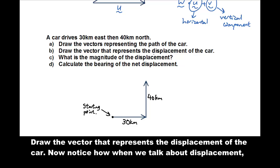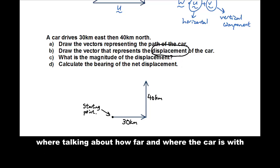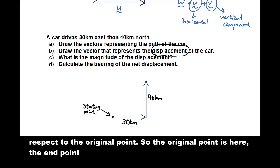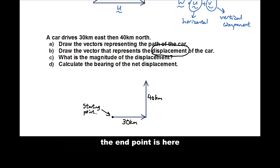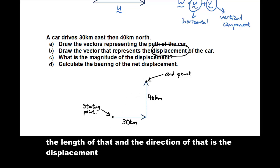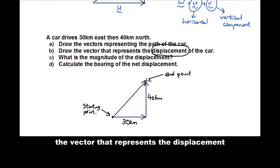Draw the vector that represents the displacement of the car. Now notice how when we talk about displacement, we're talking about how far or where the car is with respect to the original point. Okay, so the original point is here. The end point is here. So this is the end point. So from the starting point to the end point, the length of that and the direction of that is the displacement.